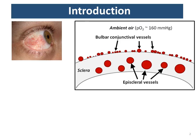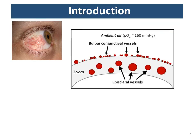There are episcleral vessels embedded into the sclera. These are large vessels, roughly about a similar size to large arterioles and venules in the retina. There are also bulbar conjunctival vessels, which lie on the outside surface of the sclera. These are diverse in size and contain many different arterioles, venules, and capillaries. Crucially, these vessels are in contact with the ambient air, so there will be oxygen diffusion going on.